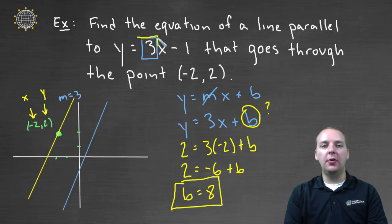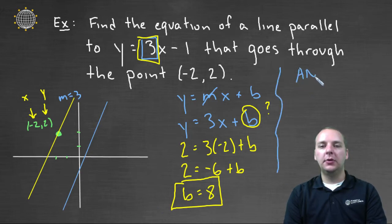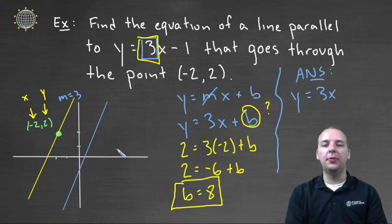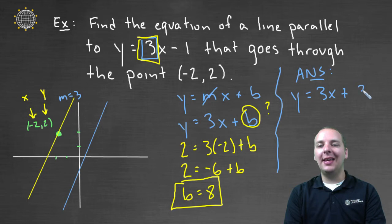So I know the b, and I know the m, and so I'm ready to write my final answer. So final answer, the equation of our line, the yellow line, would be y equals three x, because it's got to be parallel to the blue line, that also has a slope of three, plus eight.